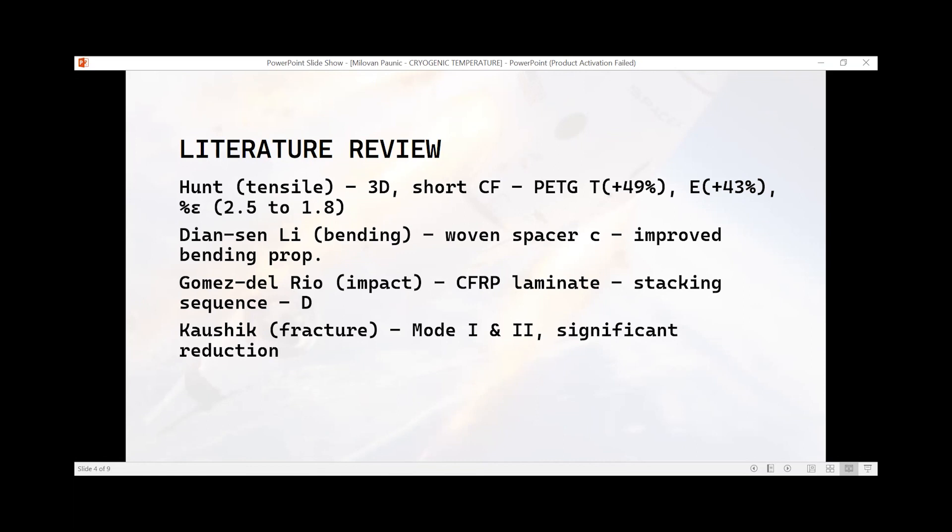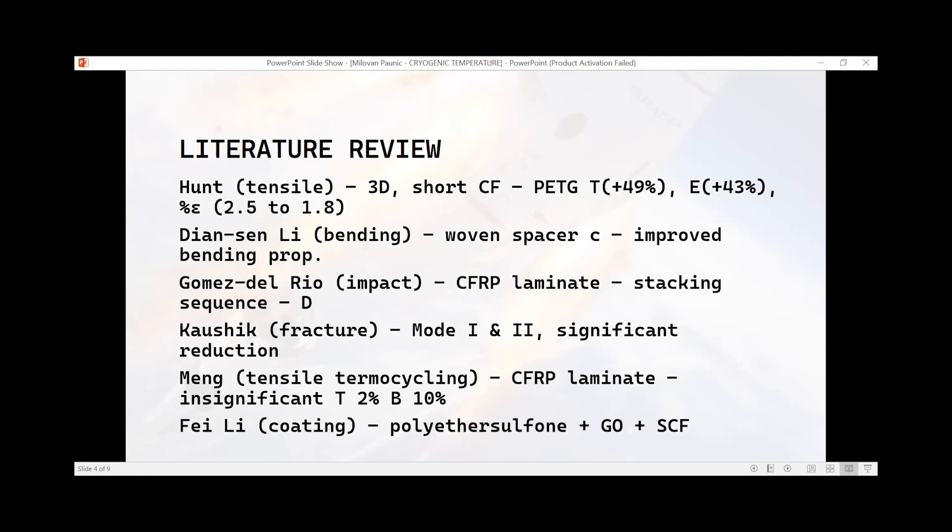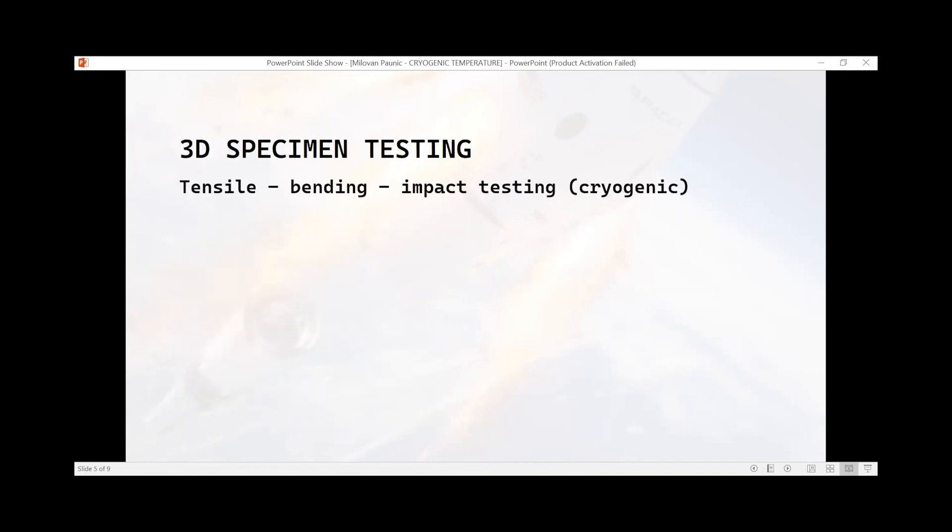There was significant reduction for both modes. Meng conducted tensile thermocycling and there was significant change in tensile and bending. Fei Li investigated application of coating to better connect matrix and short carbon fibers, and the conclusion is that graphene oxide can improve mechanical characteristics of that composite.